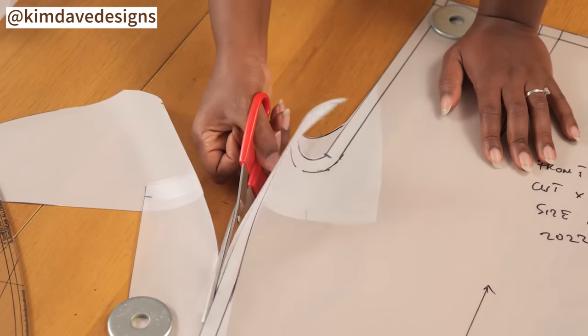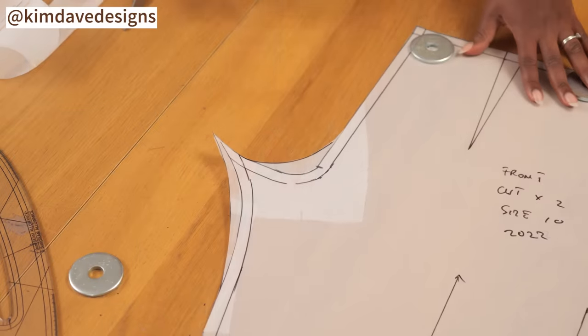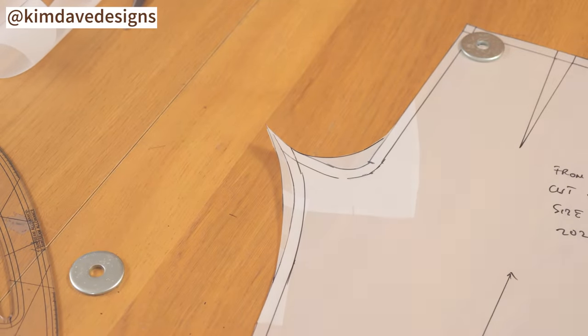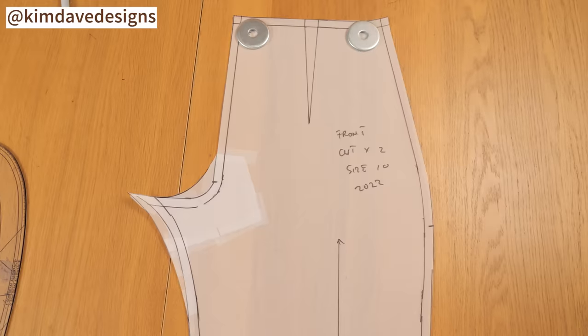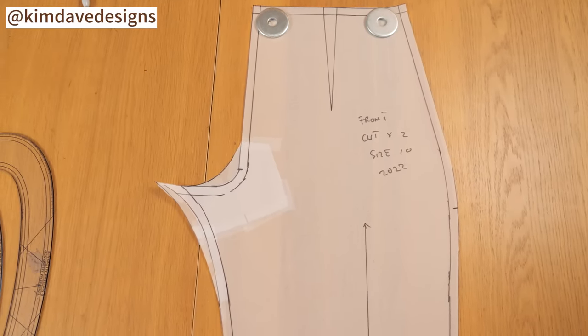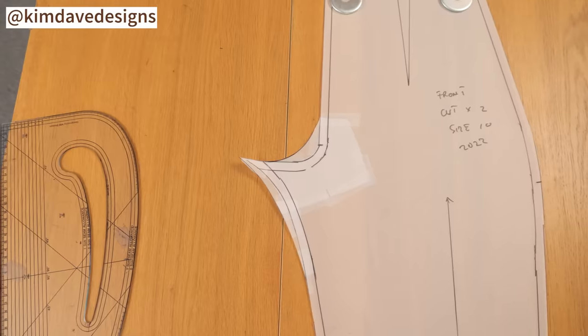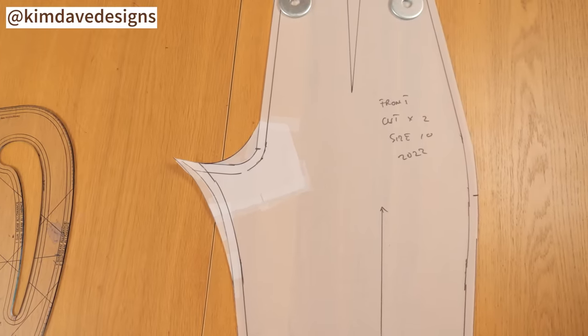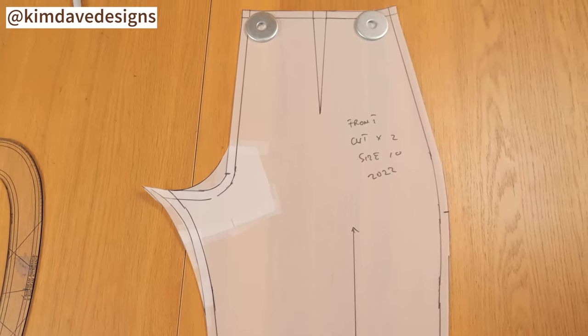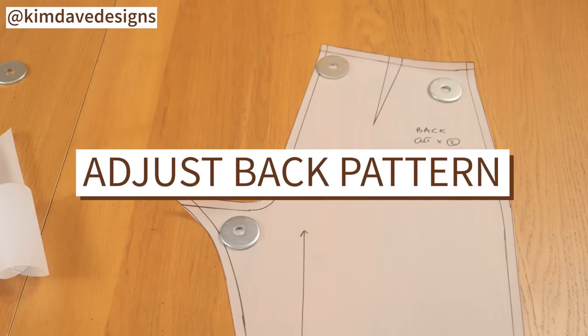So once I have that done for the front, I'm going to repeat the same thing for the back trouser pattern. So this is what the front is looking like - so far so good. The goal with this adjustment is to reduce the tightness around the crotch and make it easy to walk around, more comfortable to sit and stand in the trouser. And I'm going to repeat the same changes on the back pattern.